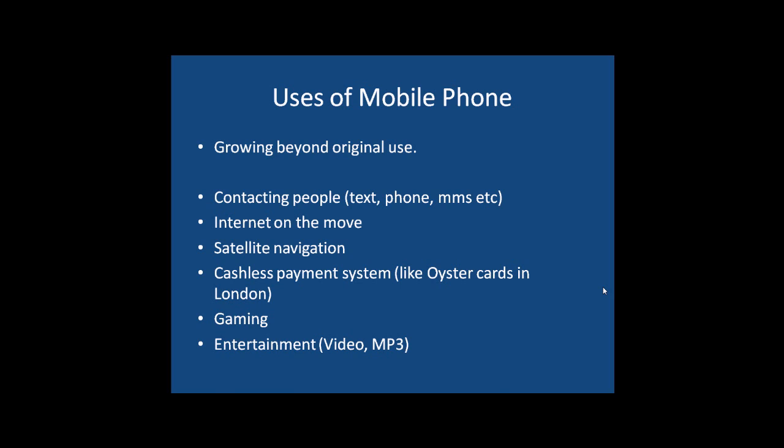So obviously you can contact people by phone, text message, multimedia messaging services. You can access the internet on the move now. They're now satellite navigation devices. A lot of them are now cashless payment systems, so you can pay for things via your mobile phone in shops, like the Oyster cards in London where you just swipe your card at the tubes. Gaming is a big part of smartphones, and you've also got entertainment — videos and MP3s can all be accessed via a mobile phone nowadays.